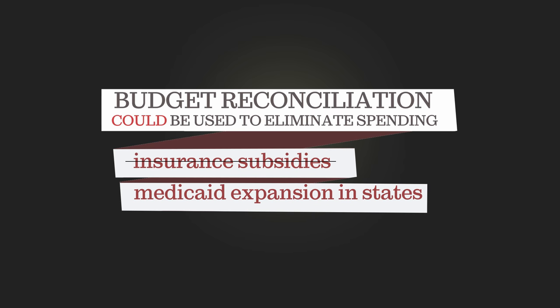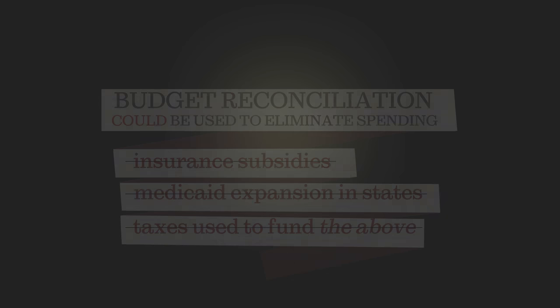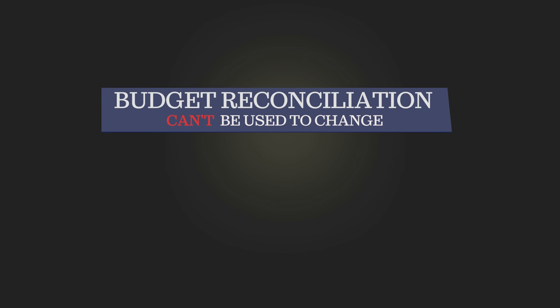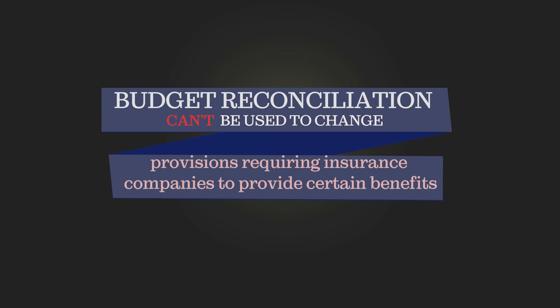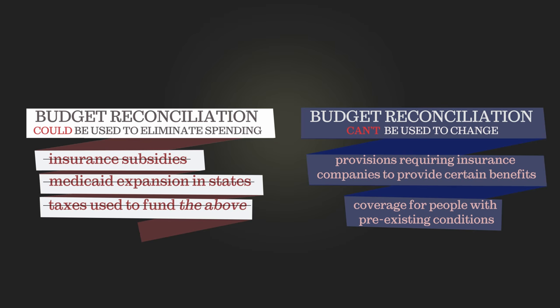Reconciliation could also cut funding to the states to expand the Medicaid program for the poor. It can also repeal the taxes that help pay for those benefits, including the tax penalties for individuals who fail to have insurance. But Congress can't use reconciliation to change parts of the health law like provisions requiring insurance companies to provide certain benefits or sell coverage to people with pre-existing conditions, because those don't directly affect federal spending.